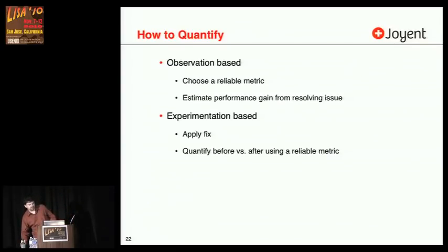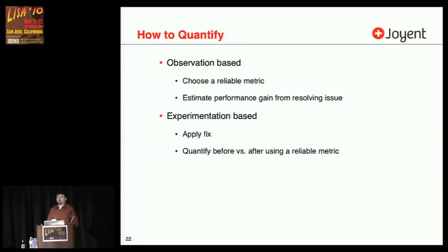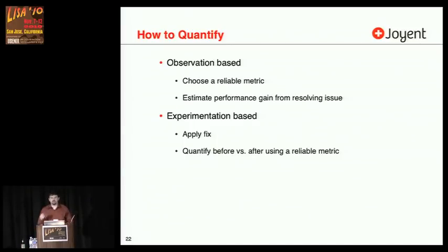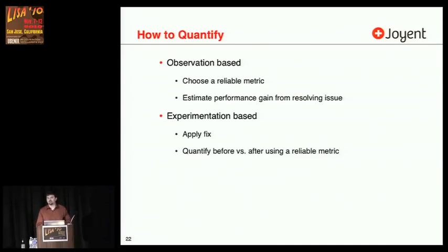How to quantify — observation-based versus experimentation-based. For observation-based, choose a reliable metric and then estimate the performance gain from resolving the issue. For experimentation-based, that's where you try to apply the fix and then quantify before versus after using a reliable metric. We don't need to quantify all performance issues through observation alone. We have another tool in our toolbox — we can perform an experiment that may be practical in a production environment or a lab environment.